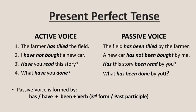The object takes the place of the subject in passive voice, and the verb becomes has/have plus been plus the third form or past participle of the verb: has been tilled by the farmer. Example two: I have not bought a new car — becomes, a new car has not been bought by me, in passive voice. Example three: have you read this story? — becomes, has this story been read by you? Example four: what have you done? — becomes, what has been done by you?